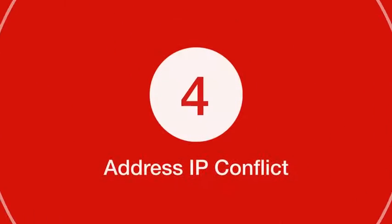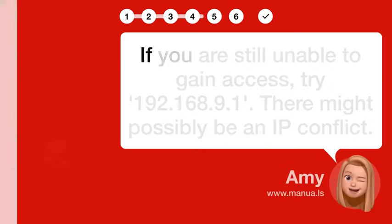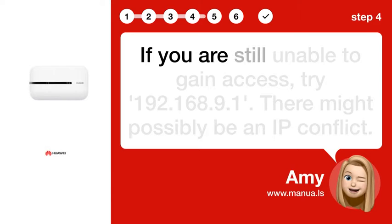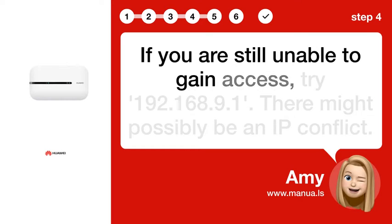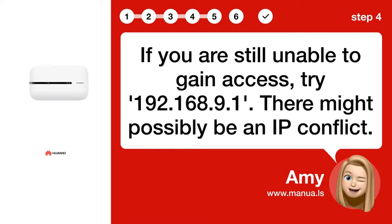Step 4: Address IP conflict. If you are still unable to gain access, try 192.168.9.1. There might possibly be an IP conflict.